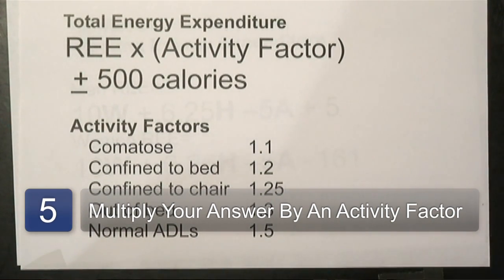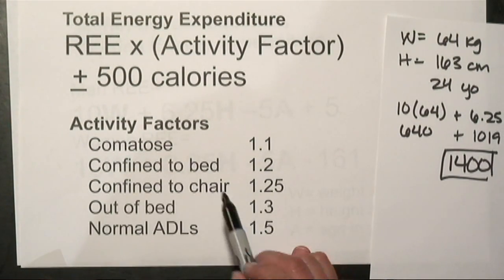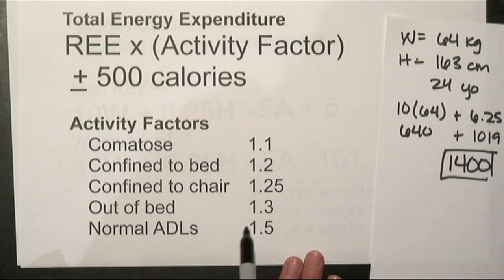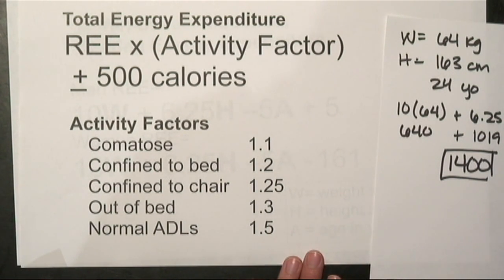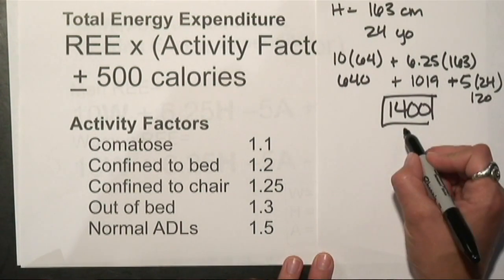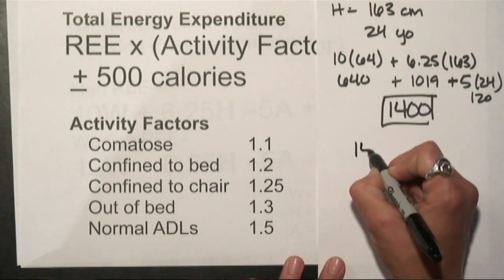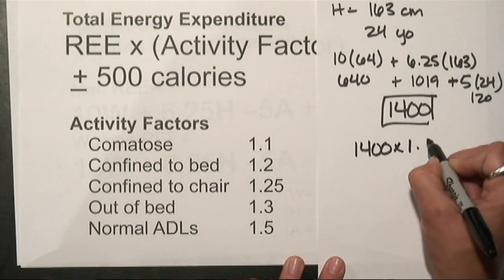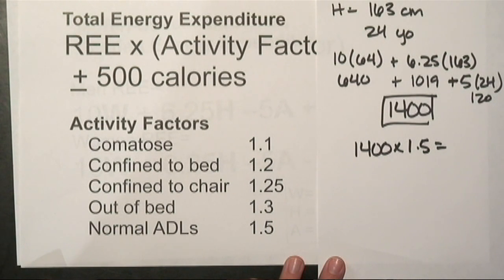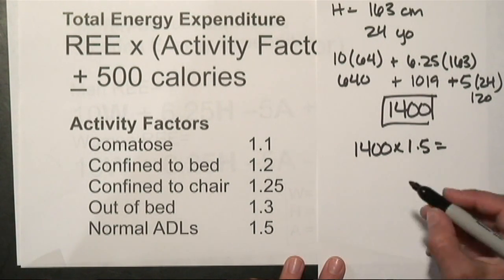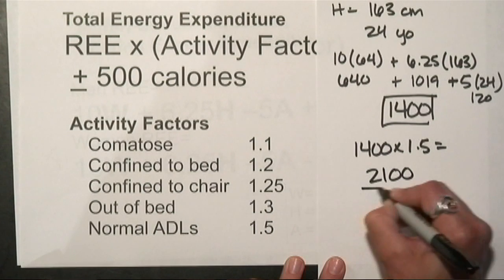This here shows a couple average activity factors typically used in the hospital. So if you're normal and moving around, 1.5 is a good activity factor. I'm going to take 1400 calories times 1.5 equals 2100 calories.